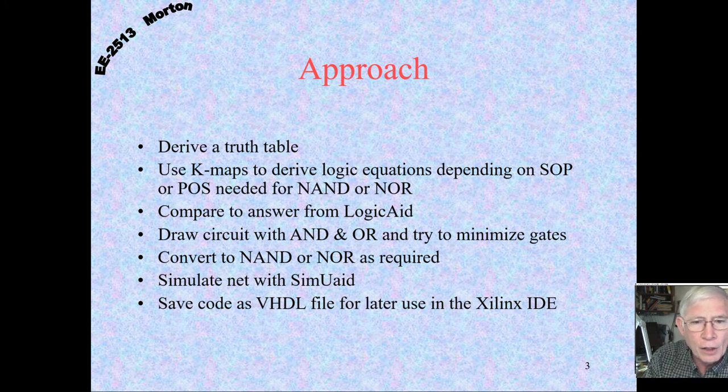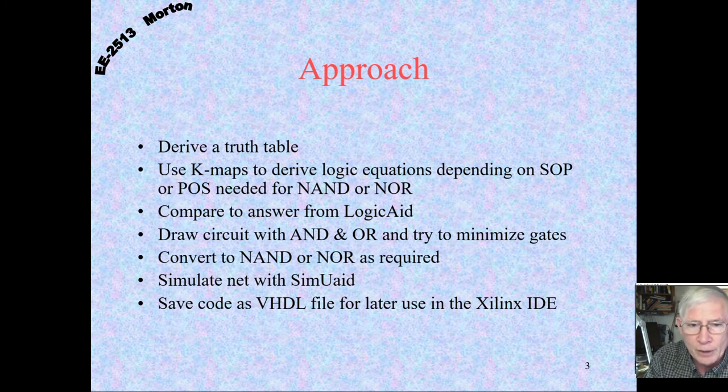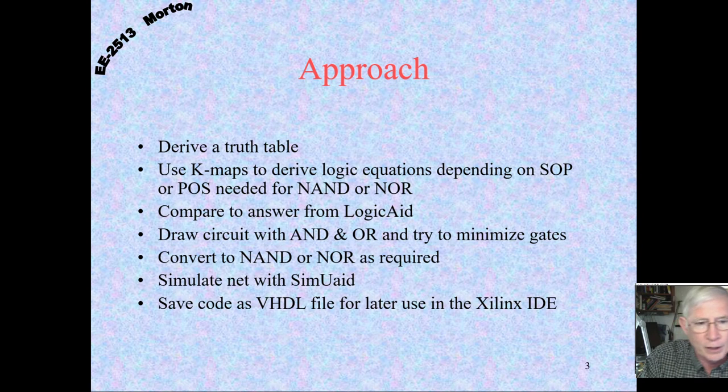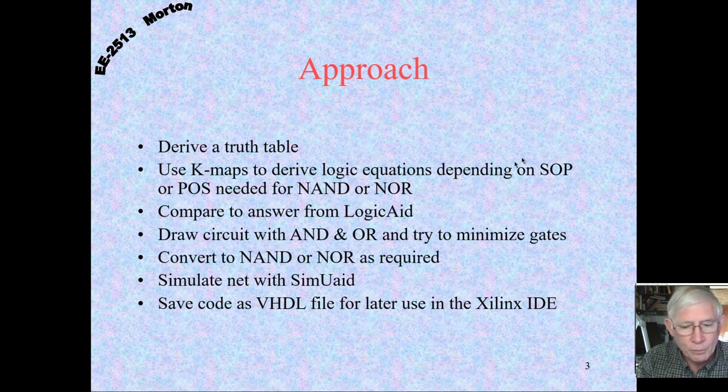If you want to use LogicAid, you can, but I don't recommend it. And then draw your circuit. And you can start off with the AND and OR form, but then change it, then convert it the way you'll know how to do once we get to that point. I can't remember if we've covered that or not. But where you can switch it to NAND and NOR gates by doing the double inversion and using DeMorgan's laws and partially expanding that. Then simulate it with LogiSim. Don't use the SimuAid for the simulation because it's too buggy.